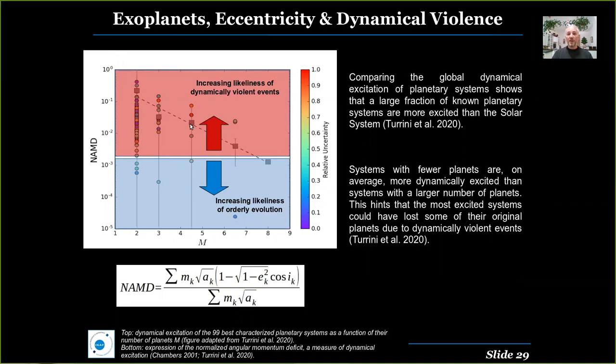This decreasing trend might suggest that some of the most excited systems with a small number of planets were originally born with a higher number of planets and lost some of them due to global-scale dynamical instabilities. Remember that dynamical excitation is produced by large perturbations, which can also be caused by global instabilities, chaotic dynamics, and planet-planet scattering events. Generally, smaller dynamical excitation values are associated with more regular evolution.